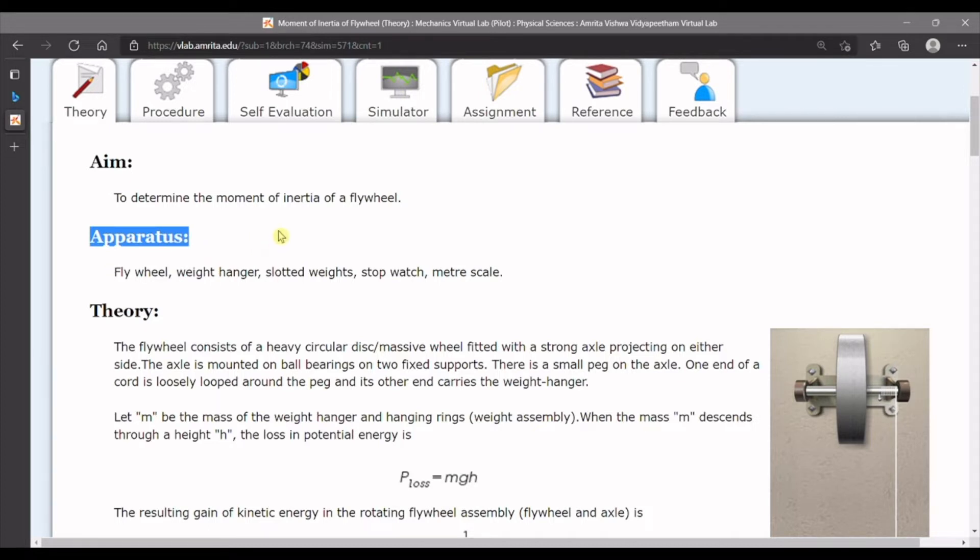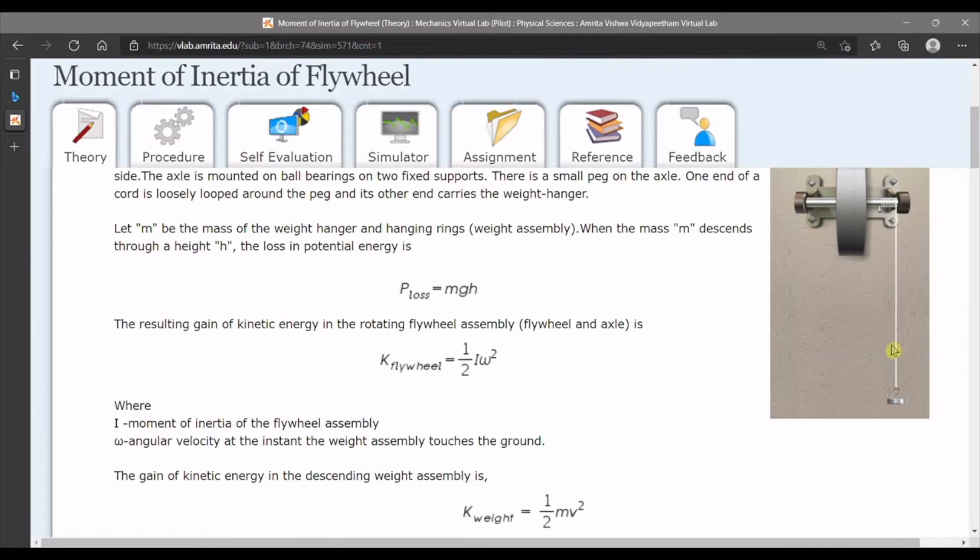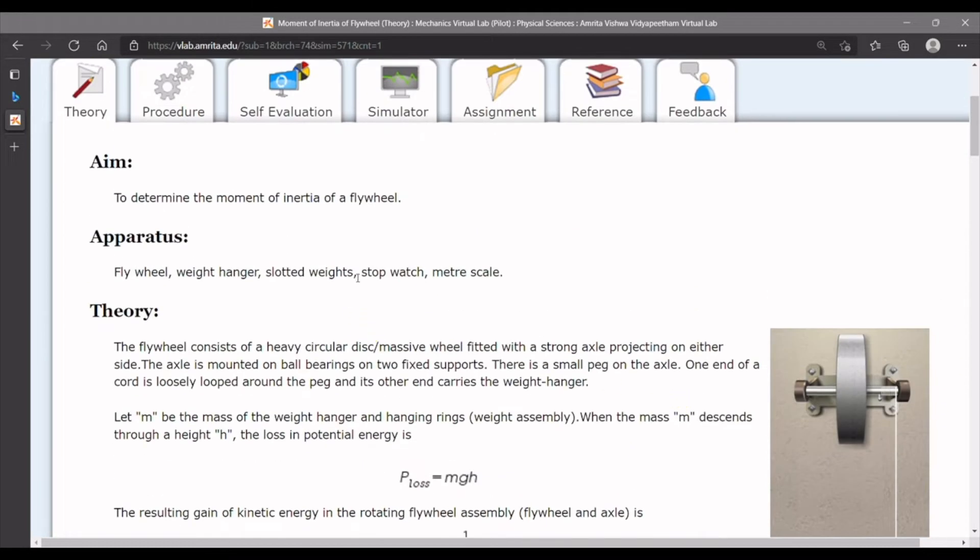First, let's understand what apparatus we need to perform this experiment. First is a flywheel, second is a weight hanger, third is assorted weights to increase or decrease the weight of the weight hanger as shown on the right side, fourth is a stopwatch to measure the time, and last is a meter scale to determine the height of the weight hanger from the ground.